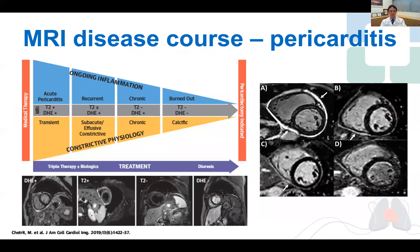And really, there's been a paradigm shift towards using MRI not just for grading the severity of pericarditis, but also to monitor the disease course and treatment response. The pericardial disease course with inflammation starts with acute, then chronic, and then burnt out. Or for constrictive pericarditis, it starts from transient to subacute, chronic.